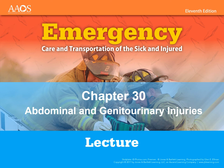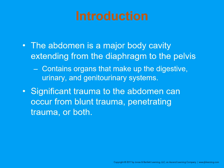Chapter 30: Abdominal and GI/GU Injuries. The abdomen is a major body cavity containing a lot of important structures. The digestive, urinary, and genitourinary systems are located there. Significant trauma to the abdominal cavity can be pretty serious and can be caused by blunt trauma, penetrating trauma, or both.